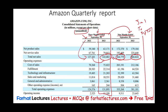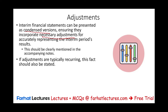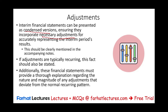You can show the prior 12-month annual if you feel that's necessary. Regarding adjustments: interim financial statements can be presented in a condensed version, but they must include any necessary adjustment to ensure the numbers are correct, and this should be clearly mentioned in the accompanying notes. If adjustments are typically reoccurring — like salaries or bonuses — we must mention that. If an adjustment deviates from normal reoccurring patterns, the financial statements must provide a thorough explanation of its nature and magnitude.